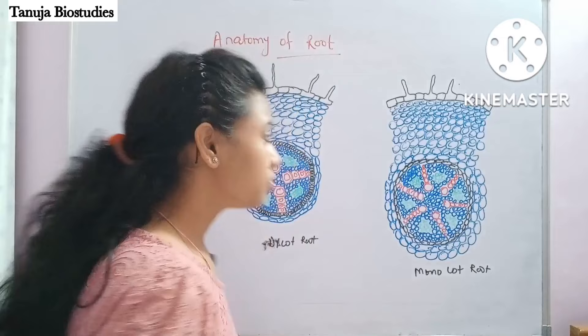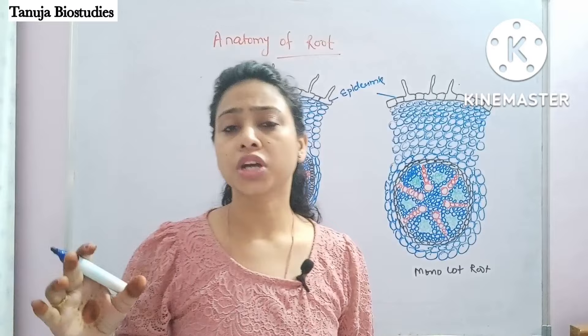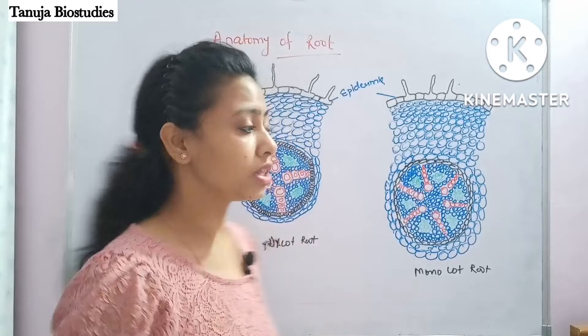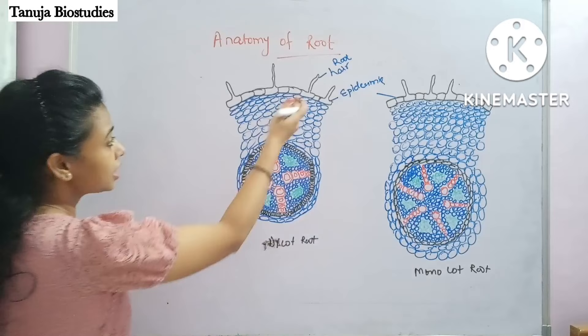The outermost layer is called the epidermis. In the epidermis there is a cuticle layer which prevents the loss of water. The epidermis has some outgrowth which is an extension — in the root's case we call these root hair.